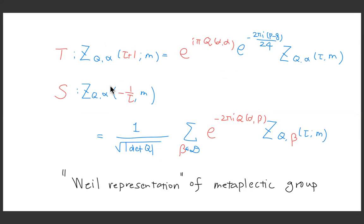In string theory there are reasons for imposing modular invariance, but here we are not imposing modular invariance. We have a set of functions that transform non-trivially — it's like a vector-valued modular form — and we have some interesting coefficients sitting here. There is some beauty in this formula. For example, if you look at the S transformation, it's essentially like a discrete Fourier transformation. You have originally alpha, then another part beta, with an exponential pairing and sum over beta. This is one of the canonical representations of the metaplectic group — like a finite-dimensional version of quantum mechanics.